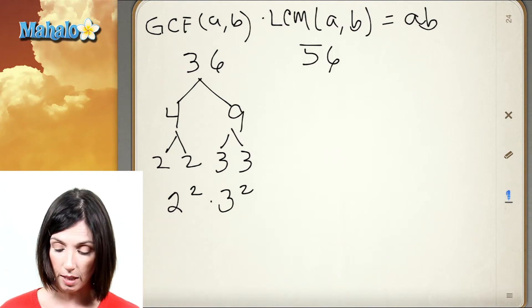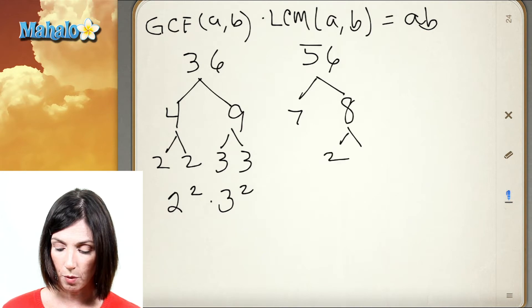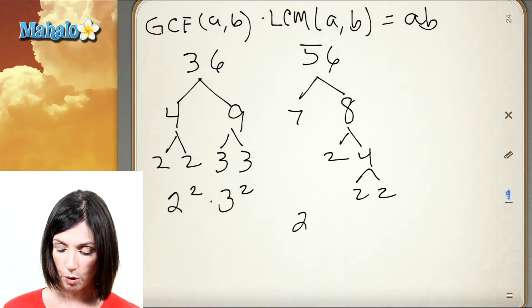Okay, and 56 factors into 7 times 8 and 8 of course is 2 times 4. So the prime factorization here is 2 cubed times 7.